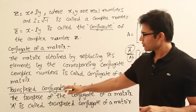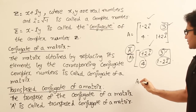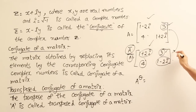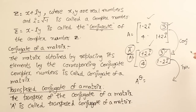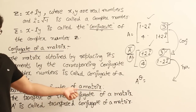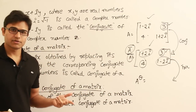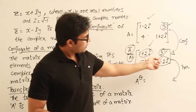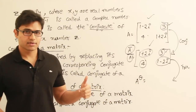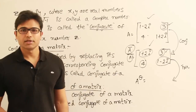The next concept is the transposed conjugate of a matrix, which is represented by theta — A to the power theta. To find the transposed conjugate, you take the matrix, find the conjugate of it, and then apply the transpose. You can do this in any order — either take the transpose first and then apply the conjugate, or take the conjugate and then apply the transpose. The resulting matrix is called the transposed conjugate of the matrix.